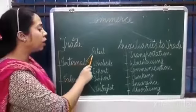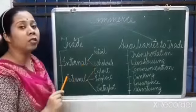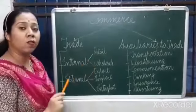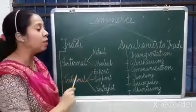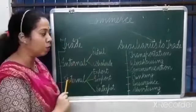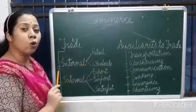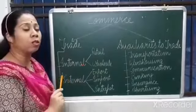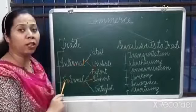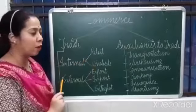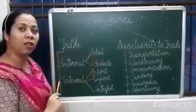Internal trade is again of two kinds: retail trade and wholesale trade. Retail trade is that trade in which goods are taken by retailers from wholesalers and then sold to ultimate consumers. Wholesalers are those sellers who purchase goods in bulk quantity from manufacturers and sell in small quantities to retailers.